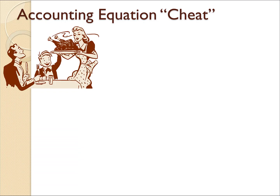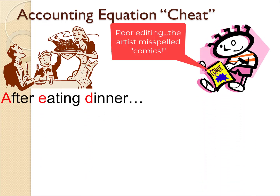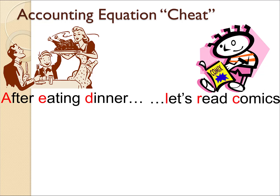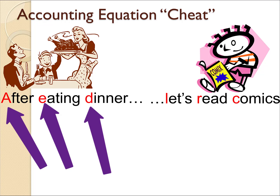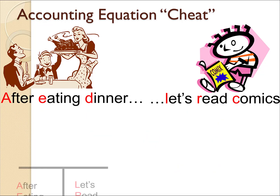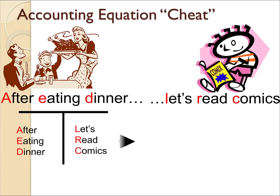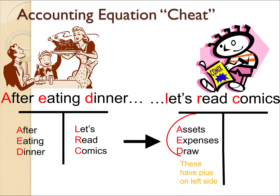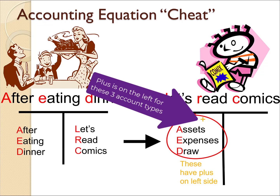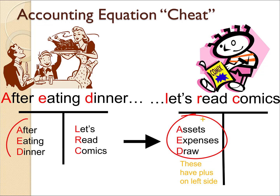So let's start with the visuals. What meal are these people eating? Looks like they're eating dinner. So our accounting equation cheat method starts with 'after eating dinner.' And then there's a kid reading comics. So: after eating dinner, let's read comics. The letters A, E, D stand for assets, expenses, and draws — these three account types have the plus on the left side. After eating dinner corresponds to A, E, D: assets increase on the left side, expenses also increase on the left side, and draws also increase on the left side.